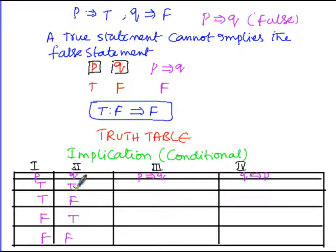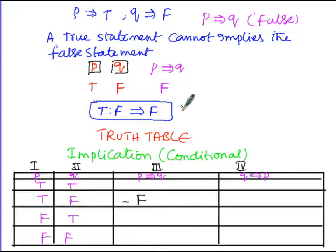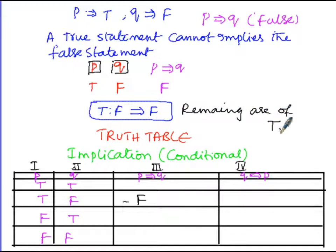The first row is TT, and we need TF for the false case. In the second row, the truth value of P is true and Q is false — TF gives F. The remaining rows all give true. So for P implies Q: TT gives T, TF gives F, FT gives T, and FF gives T.